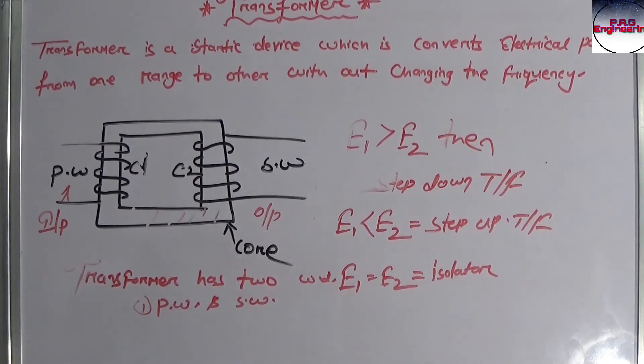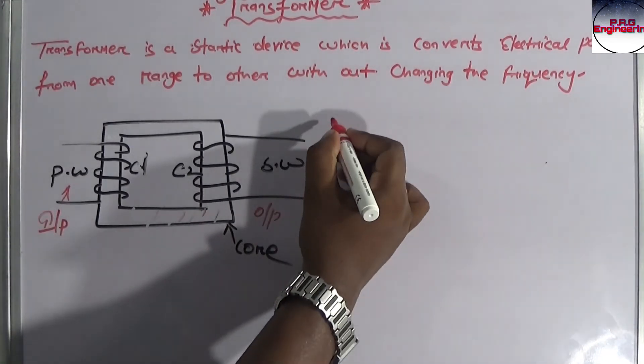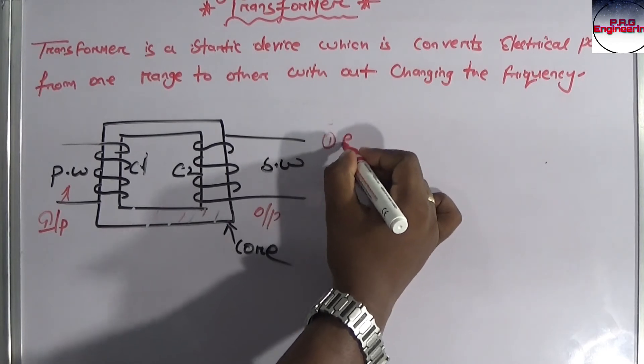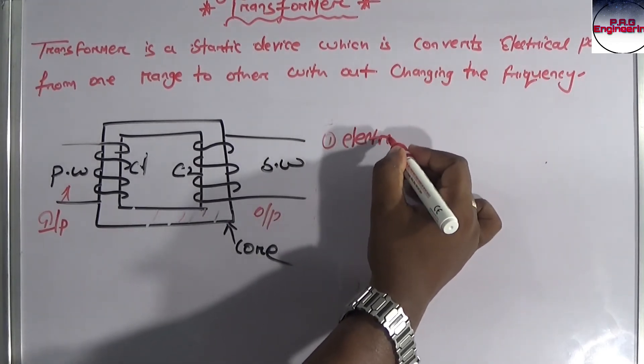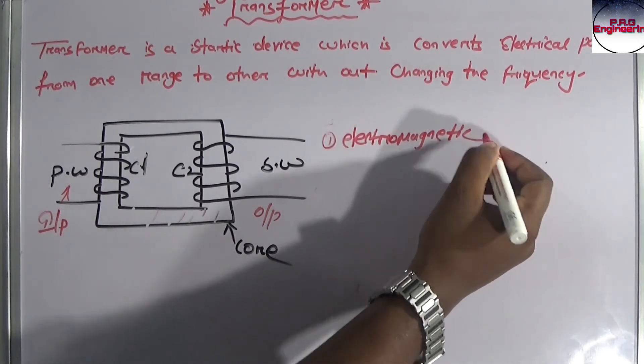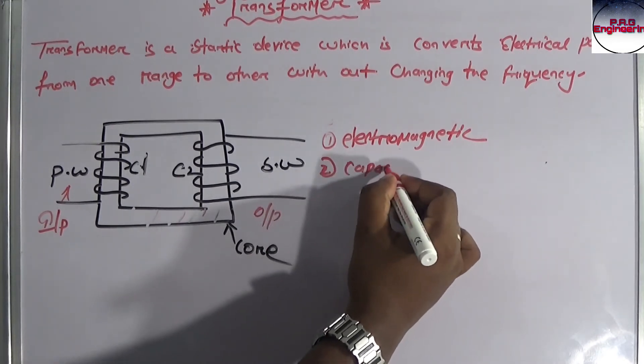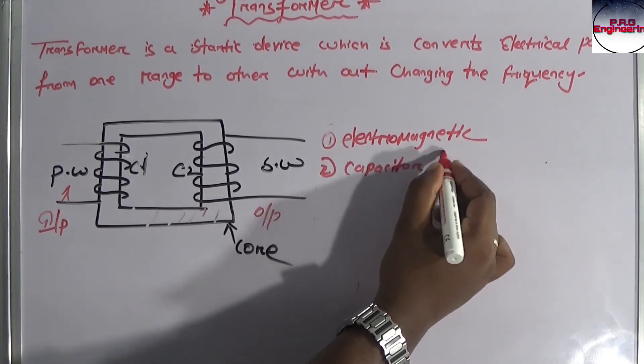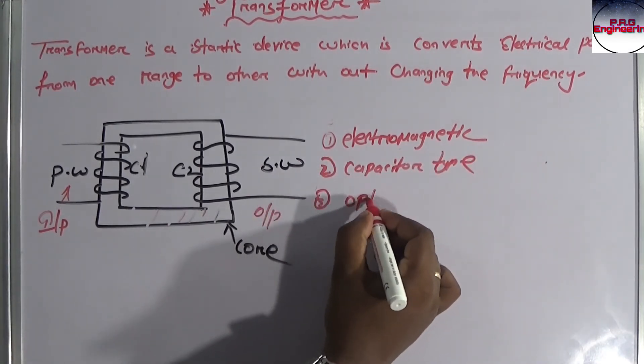Next, there are three primary types. One is electromagnetic, second is capacitor type, another is optical type.